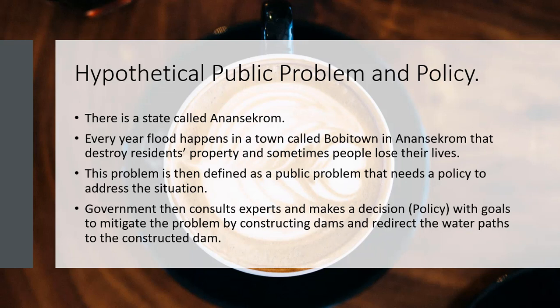We see that BB Town is just a town in Anansi Chrome, however the situation is defined as a public problem that needs to be addressed by the government. Government then consults experts and makes a decision — which we call policy — with goals to mitigate the problem by constructing a dam and redirecting the water path to the constructed dam.